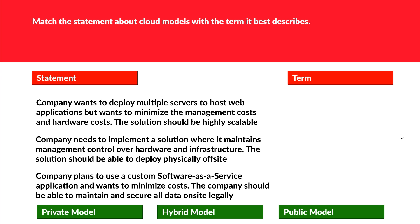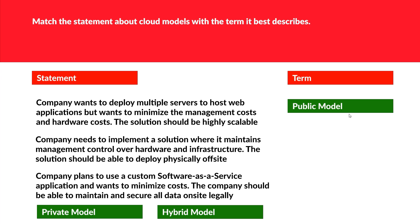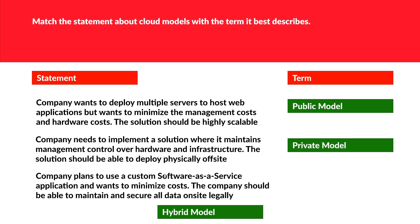The next matching question: a company wants to deploy multiple servers to host a web application but wants to minimize management and hardware costs, and the solution can be highly scalable — note the keyword 'highly scalable,' so this is the public model. A company needs to implement a solution where it maintains management control over hardware infrastructure, and the solution should be able to deploy physically off-site — 'physically off-site' means this is the private model. A company plans to use a custom SaaS application and wants to minimize cost, but must maintain and secure all data on-site legally — this demands a mixture of public and private, which is always a hybrid model.